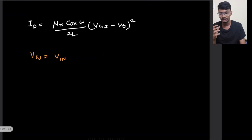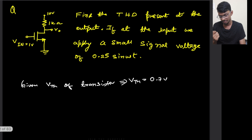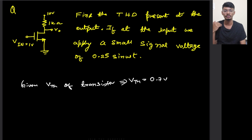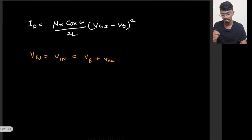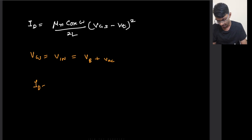V_in is a bias voltage plus an AC component. The bias voltage is 1 volt, and the AC component is 0.25, which is the signal we want to amplify. We can also rewrite the drain current equation as I_D = Kn' · (V_GS − V_T)², where Kn' = μn·Cox·W / (2L).